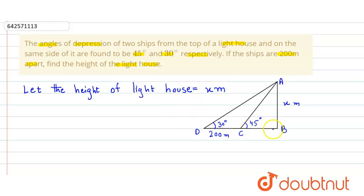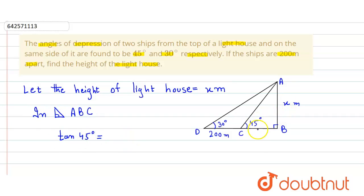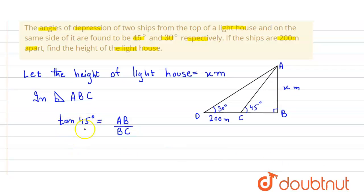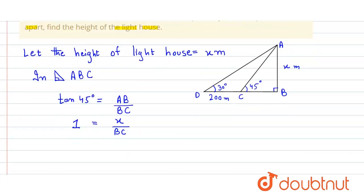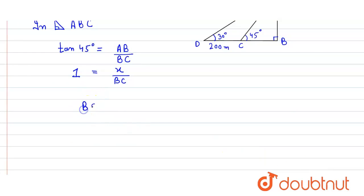Now we find out the value of BC by using the trigonometric ratio in right angle triangle ABC. We use tan(45°) which equals perpendicular divided by base, so that is AB divided by BC. Since tan(45°) = 1, we get 1 = x divided by BC. Cross multiplying, we get BC = x meters.